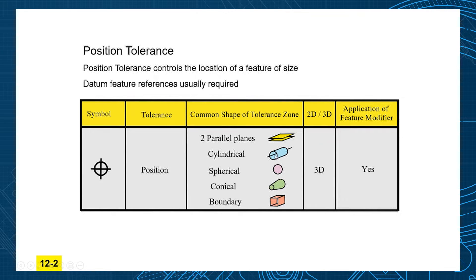Common shapes of the tolerance zones are probably going to be cylindrical zones is most common, but locating slots will use two parallel planes. Spheres will use a spherical tolerance zone, and we'll talk about these specialty applications of conically shaped tolerance zones and even these position boundary we can make in any shape you want. There are three-dimensional tolerances always position, and of course you can use a modifier MMC and LMC with these as well.